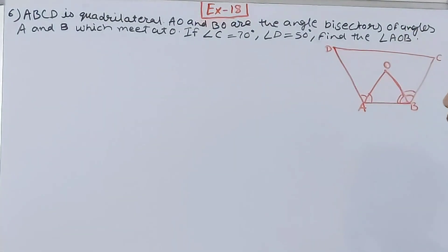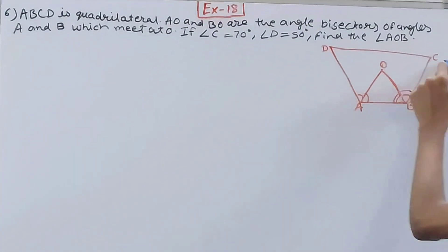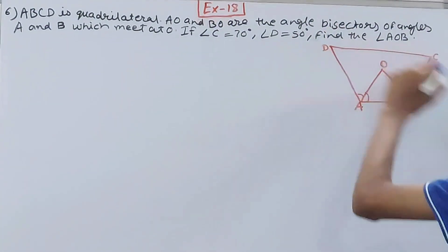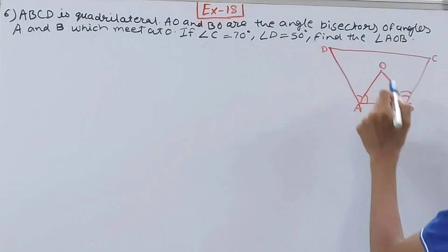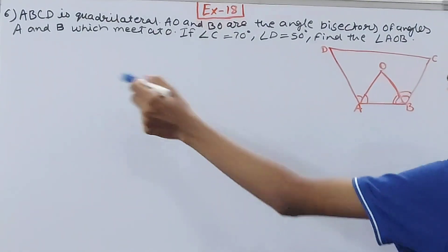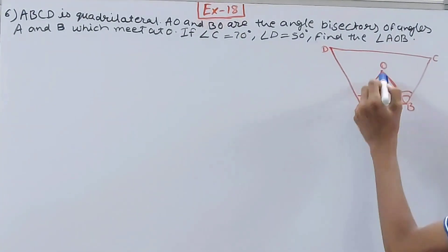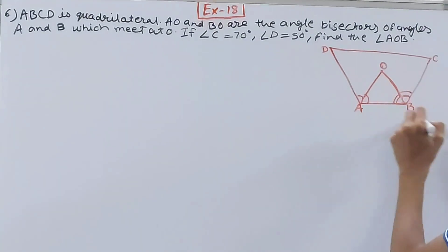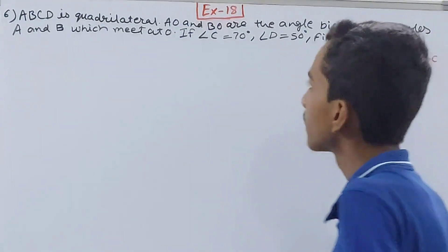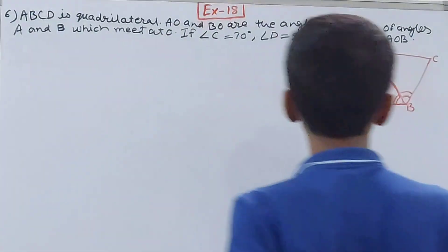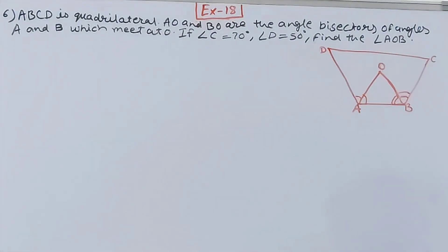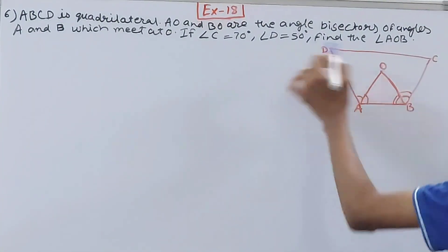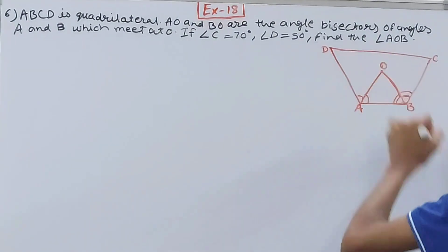ABCD is a quadrilateral. AO and BO are angle bisectors — AO bisects angle A and OB bisects angle B — and they meet at point O.